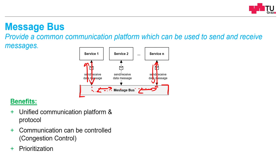Message buses could prioritize some messages over others, or some nodes over others. And we have a single interface for communication, so one network connection is enough. We don't need multiple network connections or multiple different buses. Especially think of the automotive industry — in cars, we only have one bus, one common communication bus, and every device is connected to this bus.